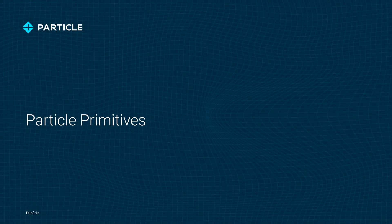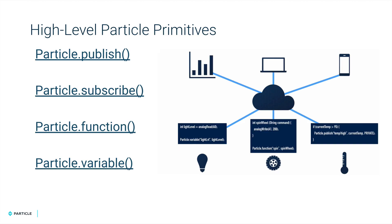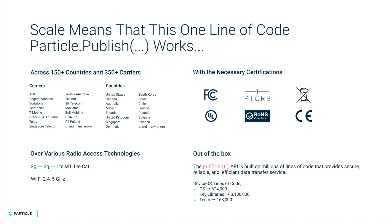One key item you need to be aware of when developing firmware is our built-in primitives. These are used to transmit data to and from the cloud with a single line of code, and they include publish, subscribe, function, and variable. The first primitive is Particle.publish, which is secure, reliable, and scalable. We abstract away all complexities behind the secure bi-directional communication. This primitive works seamlessly with our platform, giving users all the built-in functionality they have come to expect when selecting Particle.